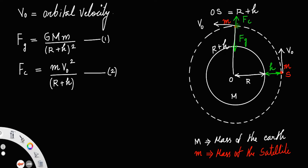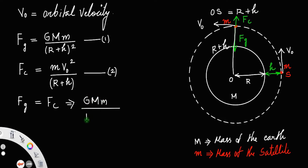In order to maintain the satellite in this orbit, these two forces must be equal; otherwise the satellite will go outside the orbit. So we set F_g equal to F_c: G·M·m / (R + h)² = m·v₀² / (R + h).